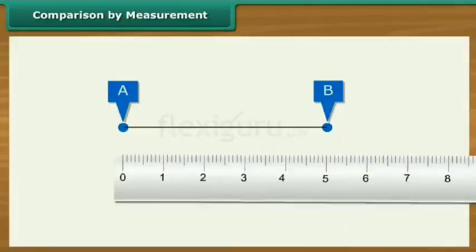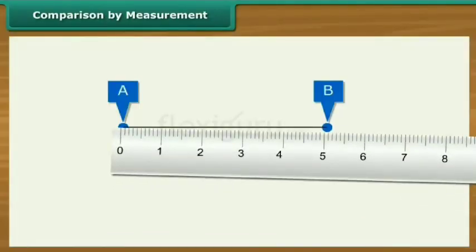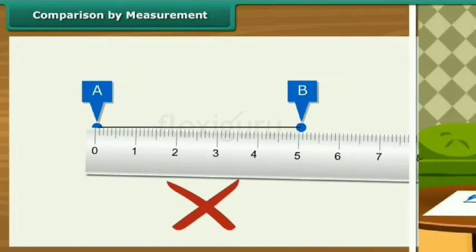Measurements can go wrong if the ruler is not placed right or the person taking the measurement views it from a wrong angle. A better way to measure is to use a divider.